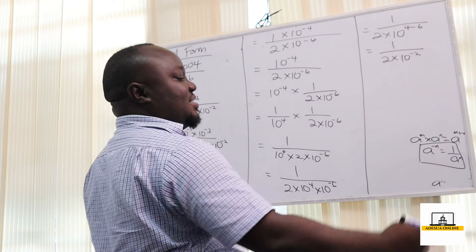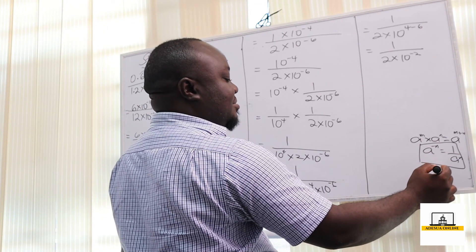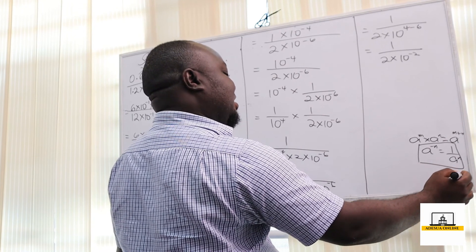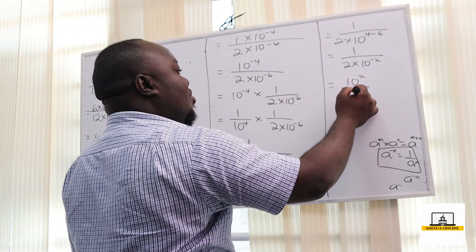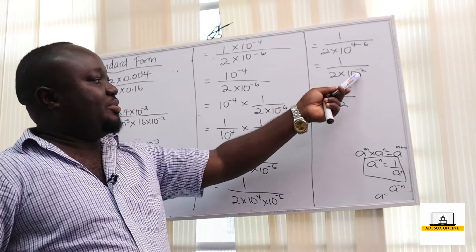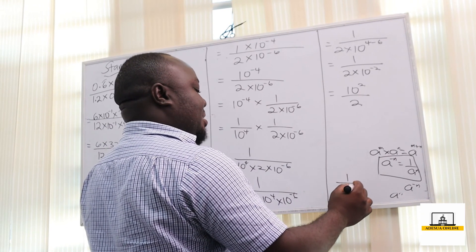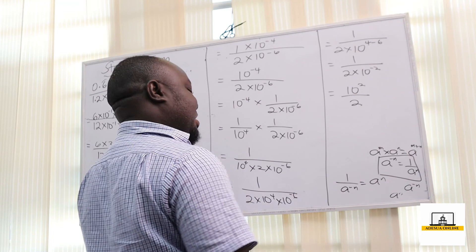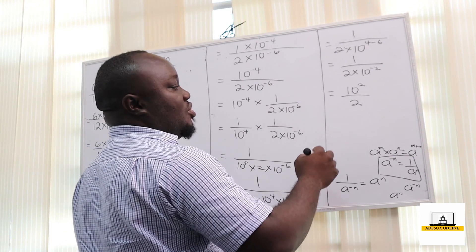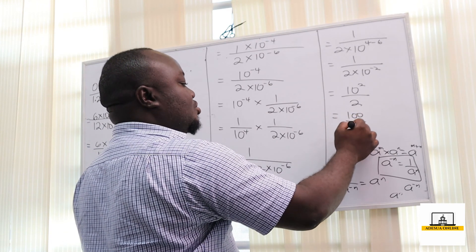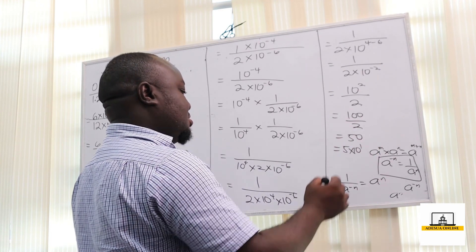Now, since 10 raised to the power negative 2 is in the denominator, we apply the rule: 1 over a raised to the power minus n equals a raised to the power n. So 10 raised to the power negative 2 moves up, giving us 10 raised to the power 2 over 2, which is 100 over 2, equal to 50, which in standard form is 5 times 10 raised to the power 1.